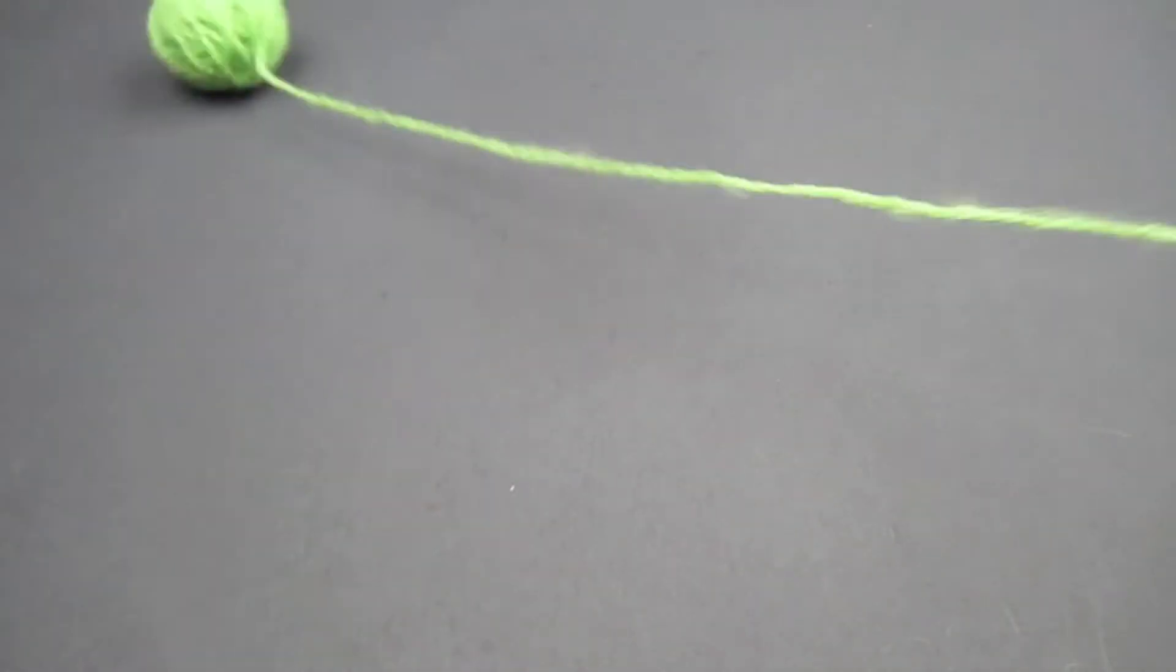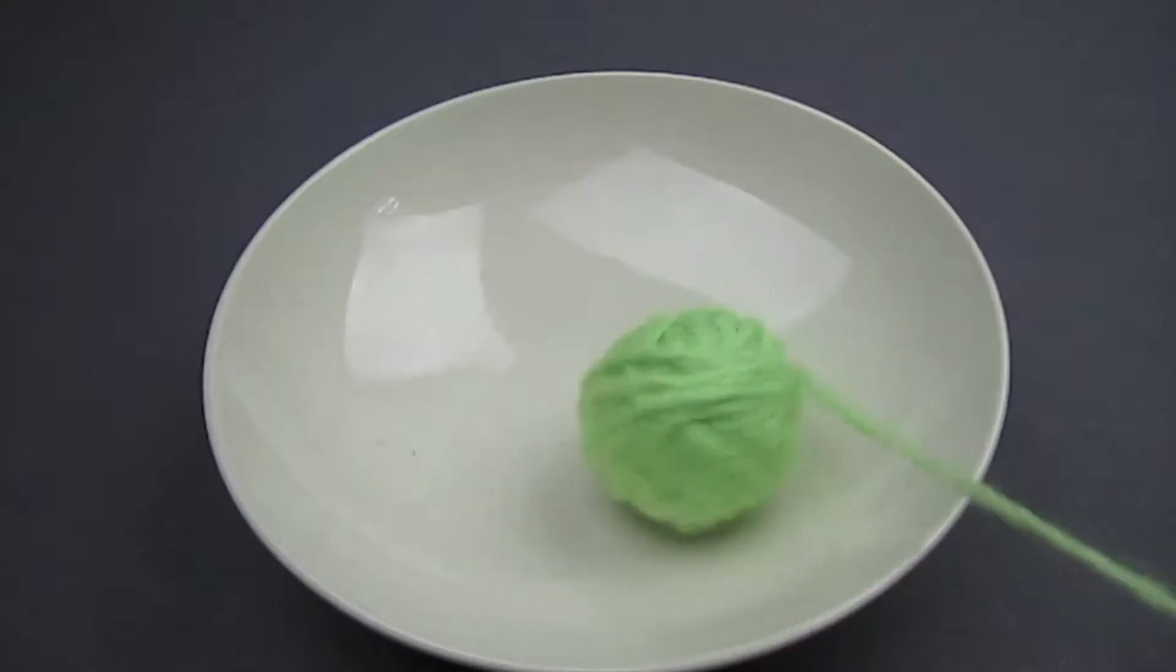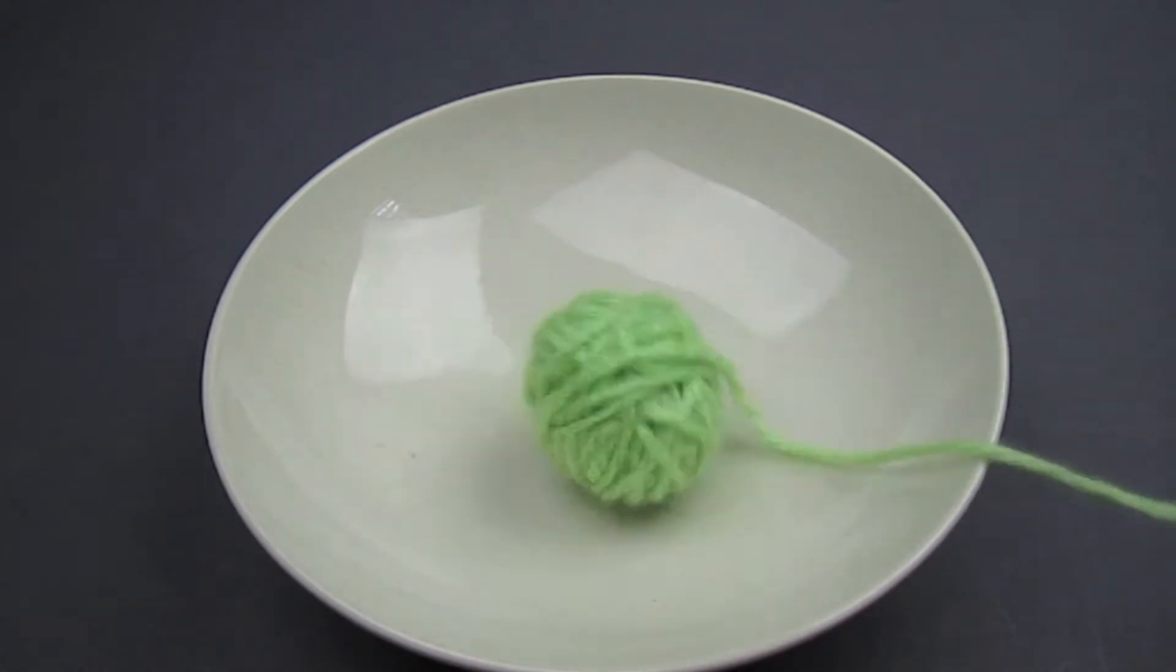Is your ball of yarn always running away when you try to knit? Simply place the ball of yarn in a bowl. You'll be able to continue knitting without worrying about it running away.